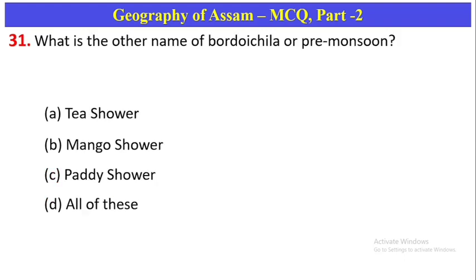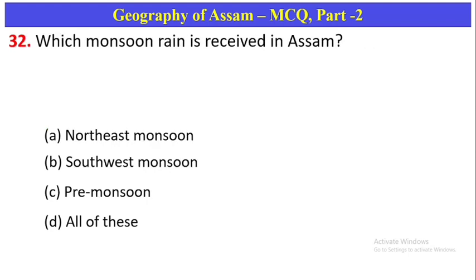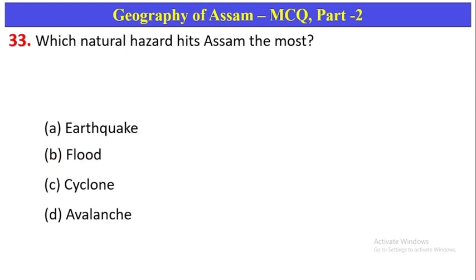What is the other name of Bordoichila or pre-monsoon? Bordoichila's other name is 'Tea Shower'. Option A is correct. Which monsoon rain is received in Assam? Option B is correct.